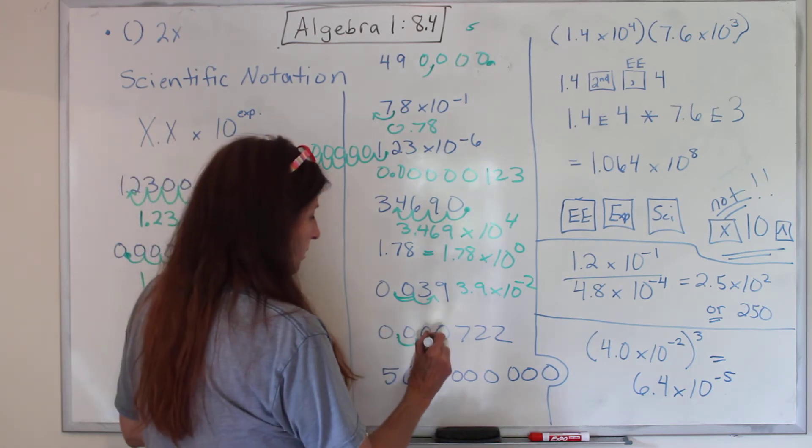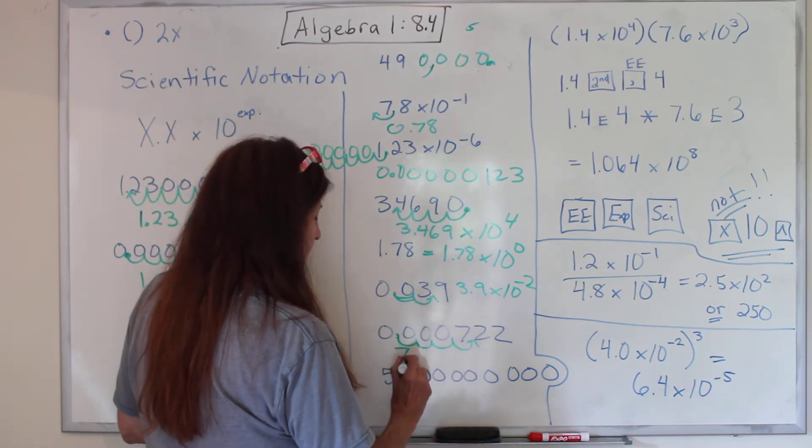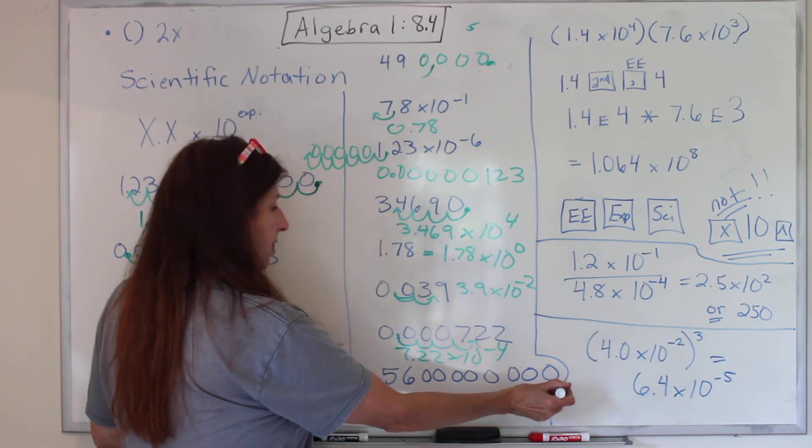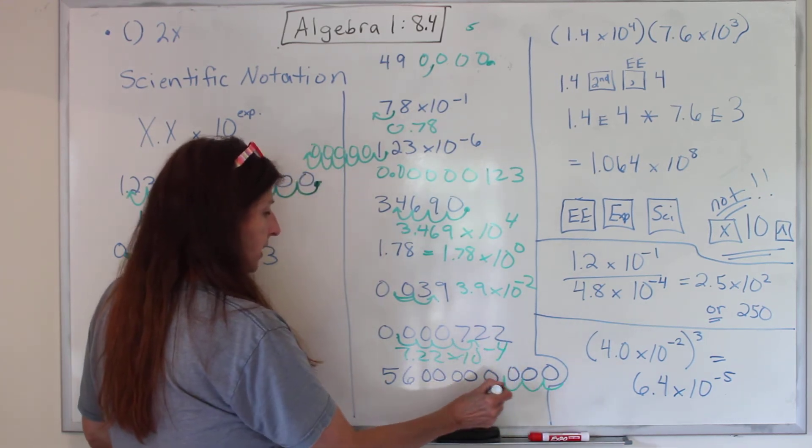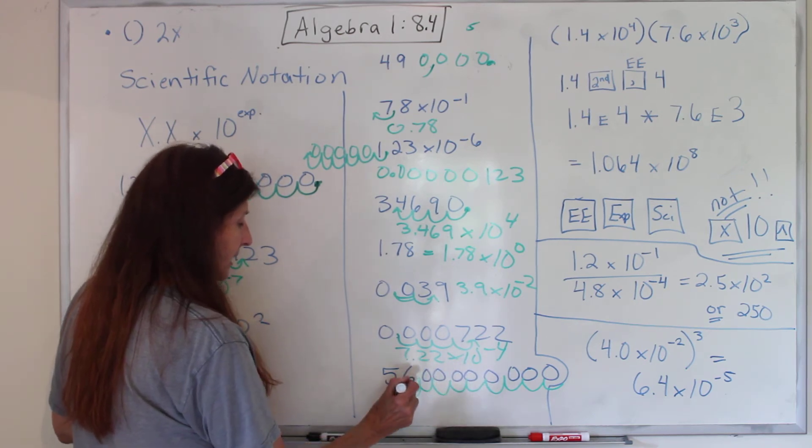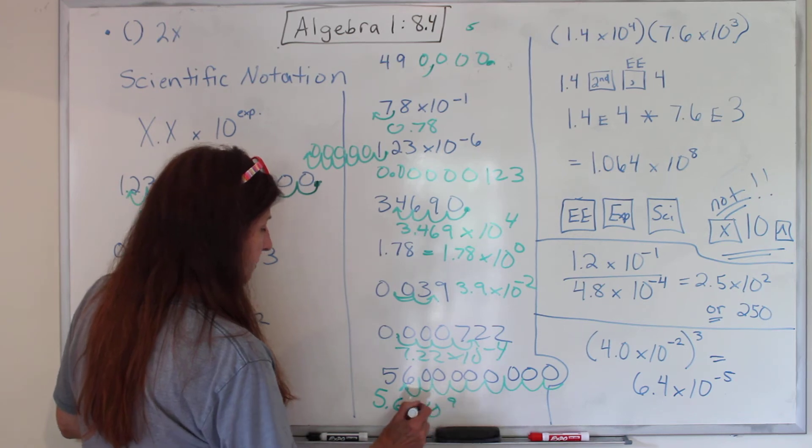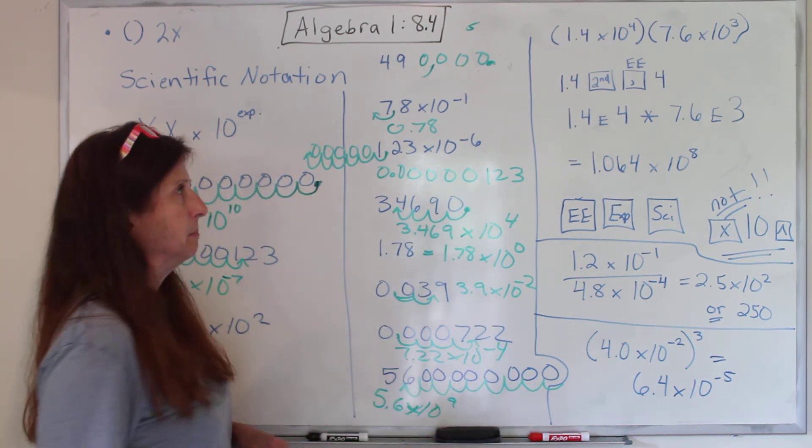This one, one, two, three, four. 7.22 times 10 to the negative fourth. This one, one, two, three, four, five, six, seven, eight, nine. 5.6 times 10 to the ninth power is positive. It's big.